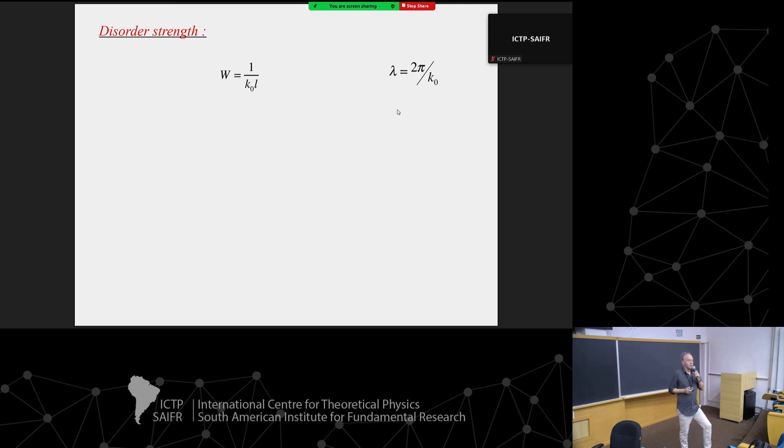The disorder strength: we defined weak disorder by saying that the wavelength is much smaller than the elastic mean free path. There is a dimensionless parameter which controls the strength of disorder, and this parameter is 1 over k₀L, or wavelength divided by elastic mean free path. This quantity is dimensionless and describes the strength of the disorder.